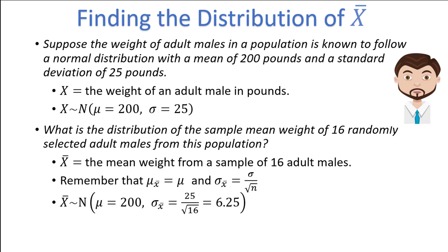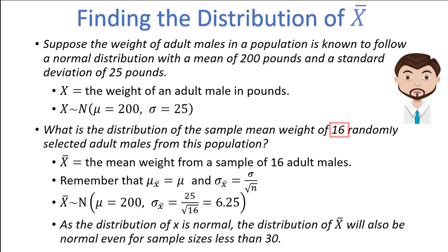Now hold on a minute — you might say: doesn't the sample size need to be at least 30 to say anything about the sampling distribution? Our sample size was only 16. Great question. Since the distribution of x is normal, the distribution of x-bar will also be normal, even for sample sizes less than 30.